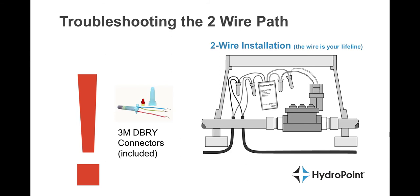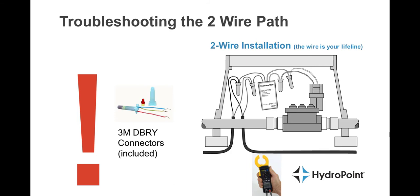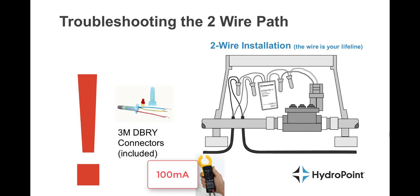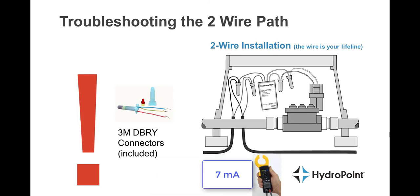Here is how you know if you found something. With the short finding mode on, any piece of wire that is before the short will have a very high milliamp reading. Any piece of wire that is after the short will have a very low milliamp reading. So if coming into a valve box you have a hundred milliamps, and going out of that valve box you have seven, that is a significant change. That difference indicates there is a short in one of those components or connections.